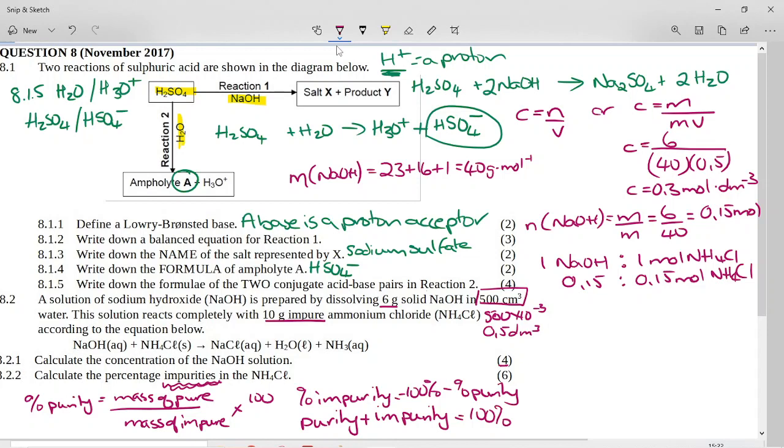So once I know that, I want to turn these moles of ammonium chloride into a mass, because we want to make a mass-mass calculation, mass of pure over mass of impure. So what is my molar mass for ammonium chloride?